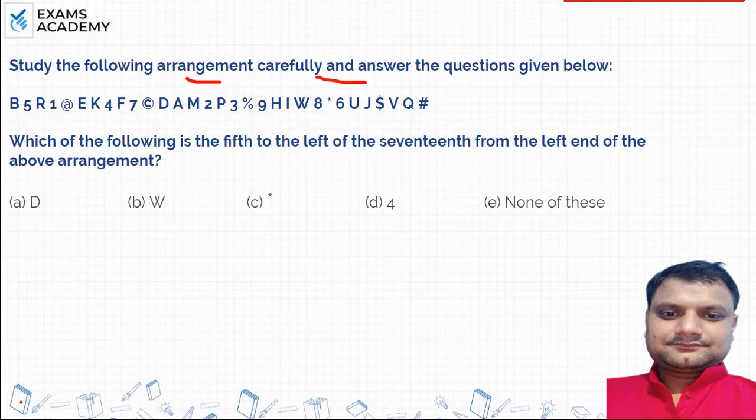Study the following arrangement carefully and answer the question given below. You have numerical numbers, alphabetical letters, alphabets and symbols all in one line. Now you have to answer this question: which of the following is 5th to the left of 17th from the left end of the row.